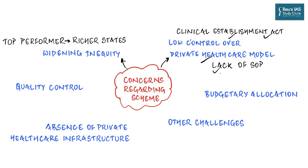Since payment is not coming from the patient, the patient is least bothered about what charges are incurred — giving hospitals a strong incentive to carry out unnecessary tests and procedures, billing the expenses to the government. Other countries running similar schemes have very elaborate standard operating procedures defining treatment and procedures for each symptom and disease, which reduces the incentive for hospitals to behave randomly, as the government can hold them accountable against the SOP.